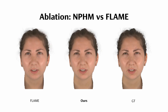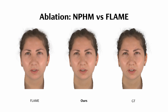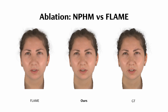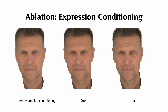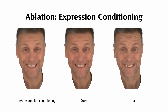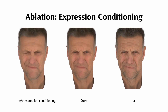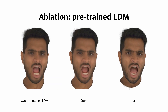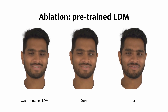We also ablate several parts of our pipeline to understand their contribution to Diffusion Avatars. First, we consider using a simpler morphable head model such as Flame. Due to Flame's limited geometry and expression space, the avatar animations lack expressiveness. Second, direct expression conditioning helps Diffusion Avatars to synthesize details not directly modeled by NPHM's geometry, such as eye movement. Finally, using a pre-trained stable diffusion model steers Diffusion Avatars towards generating more realistic faces.